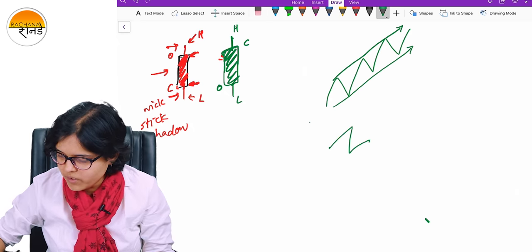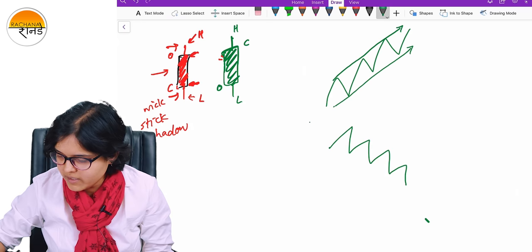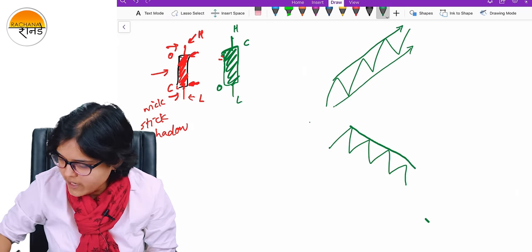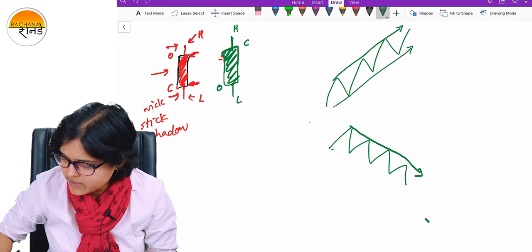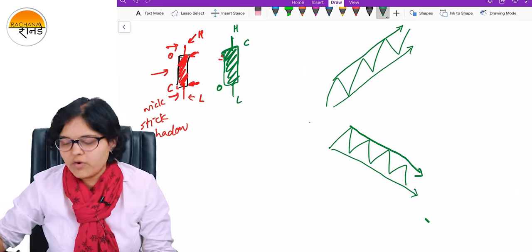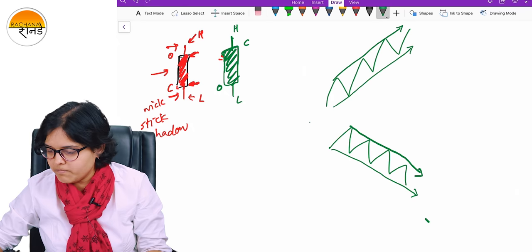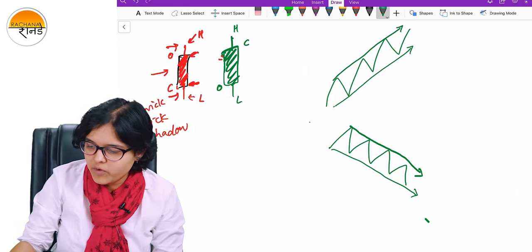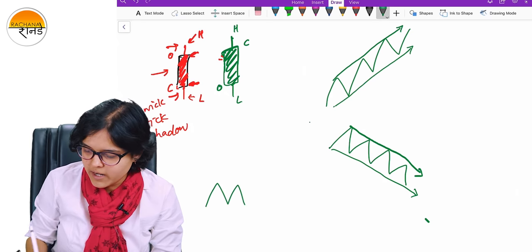Second, we talked about the concept of a downtrend. A downtrend would go something like this. What is happening? The highs are falling and simultaneously the lows are also falling. This is a case where we are talking about a downtrend.